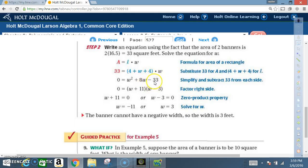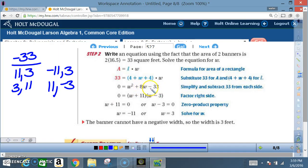And then we ask ourselves, through multiplication, how can I come out with a negative 33? But through addition, come out with a positive 8?